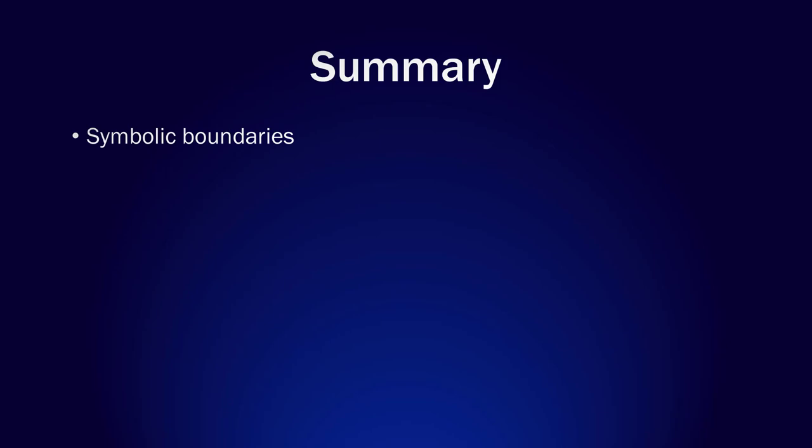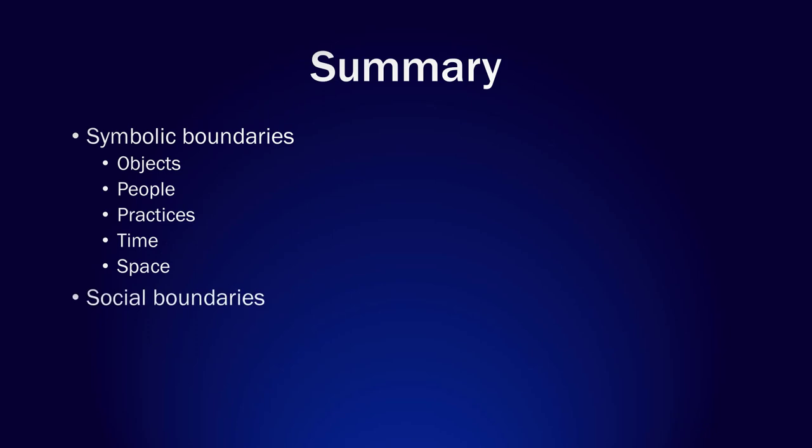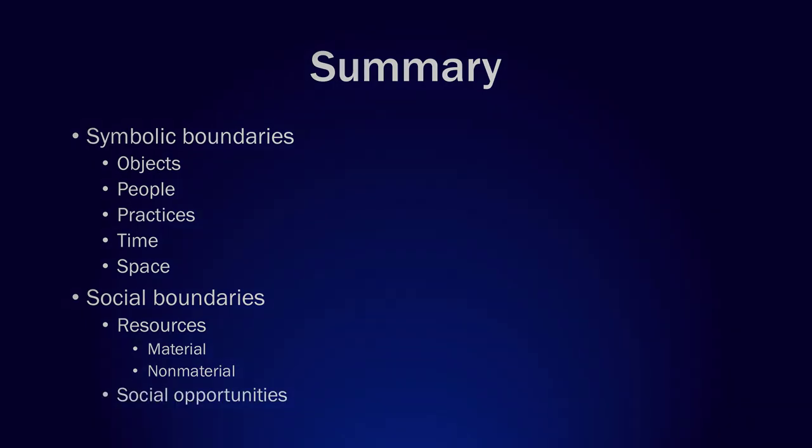In this lecture, we have talked about symbolic boundaries as conceptual distinctions, and social boundaries as objective differences in the form of unequal access to and unequal distribution of resources and opportunities. Symbolic boundaries apply to nearly everything, including objects, people, practices, and even space and time. Social boundaries, in the meantime, limit who is and is not granted access to resources — both material and non-material — as well as social opportunities.